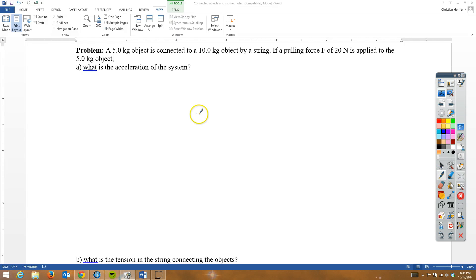Hey, this is Horner, and we're going to look at some connected object problems. This first one says you have a 5-kilogram object, so here's our 5-kilogram object. It's connected to a 10-kilogram object by a string, so there's your string. We have another string, and we're using that string to pull the 5-kilogram object with a force of 20 newtons, and because they're connected, they both should move together. So the system is this entire thing.